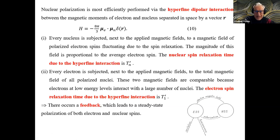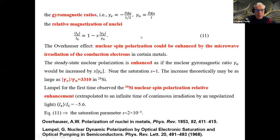Every electron is subjected to the total magnetic field of all nuclei. This I mentioned in the very first slide. These two magnetic fields are comparable because electrons interact with a larger number of nuclei. They can feel more nuclei than only one or two. This feedback leads to a steady-state polarization, which is given by this formula 11. In fact, it's pertinent to the Overhauser effect: nuclear spin polarization could be enhanced by the microwave radiation of the conducting electrons in Saturn metals.